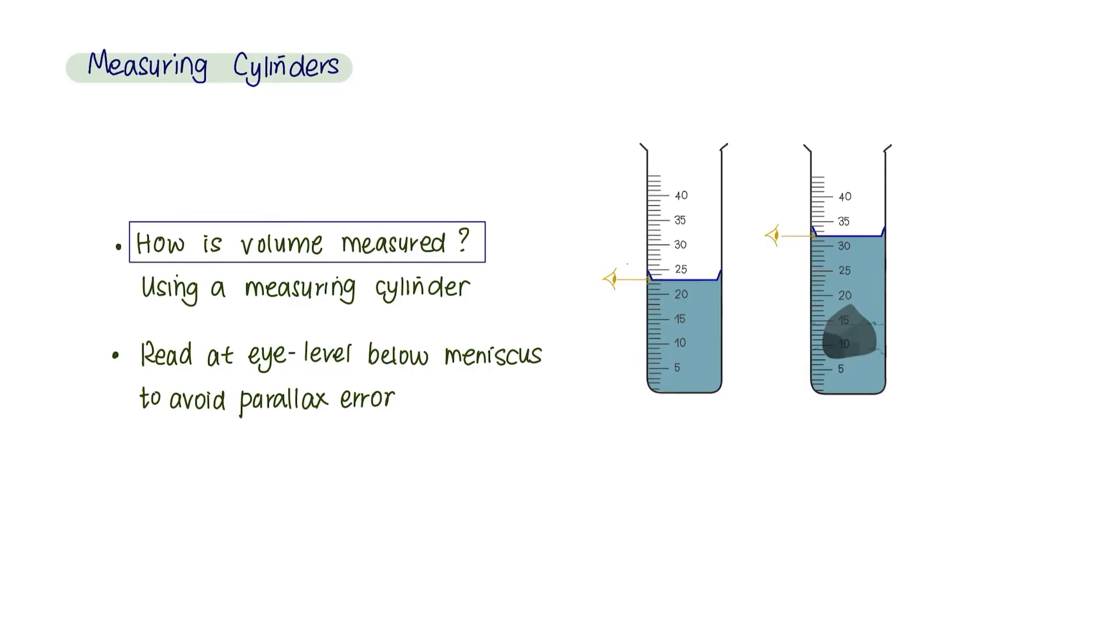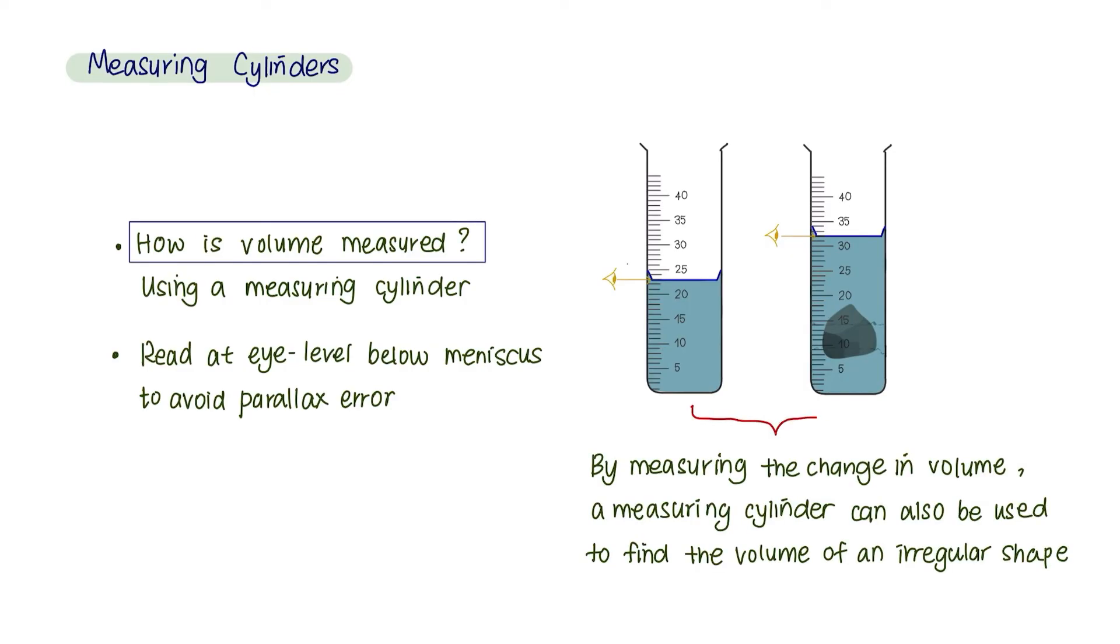Measuring cylinders can be used to measure the volume of liquids. By measuring the change in volume, a measuring cylinder can be used to find the volume of an irregular shape. When measuring volume, read the measurements at eye level below the meniscus to avoid parallax error.